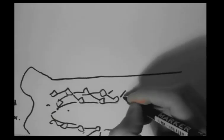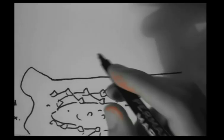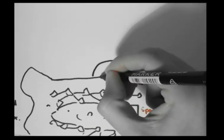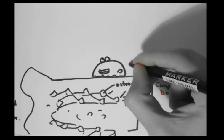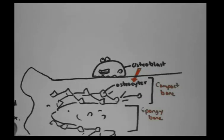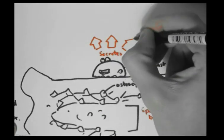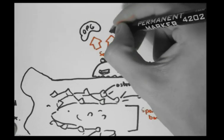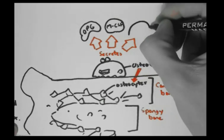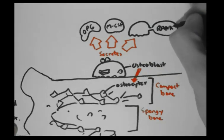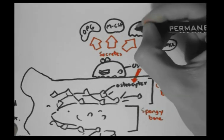Looking at these cells in more detail: osteocytes are situated in the outer compact bone, while the center of bone contains holes known as the spongy bone. Osteoblasts are also found on the outer part of the compact bone, and if inactive, they can become osteocytes. Osteoblasts secrete three important substances: OPG, MCSF, and a rank ligand, which is usually bound to the osteoblast surface but can also be a free molecule. All these molecules affect osteoclasts.